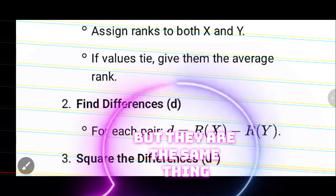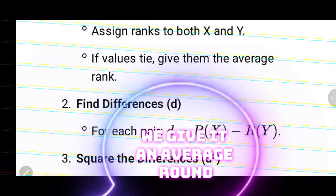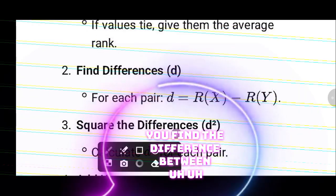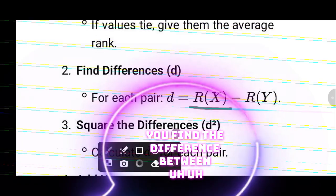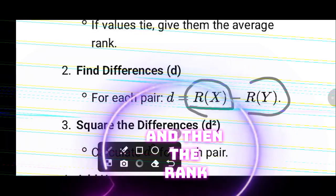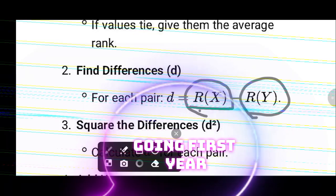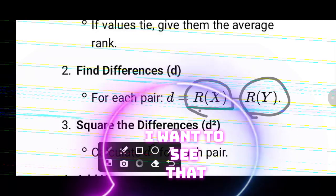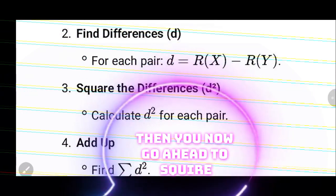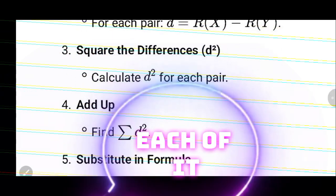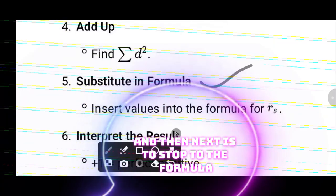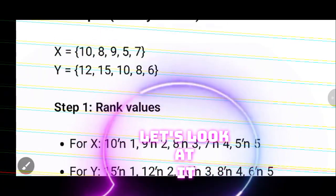If values are tied — that is, two scores are the same — you give them an average rank. The next step is to find the difference between the rank of the first score and the rank of the second score. After that, you square each difference, then add them all up (summation d squared), and finally substitute into the formula and solve.